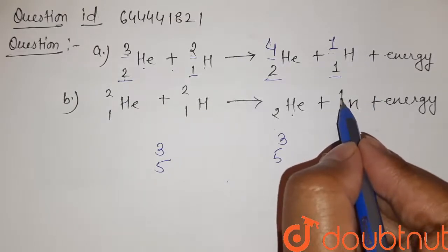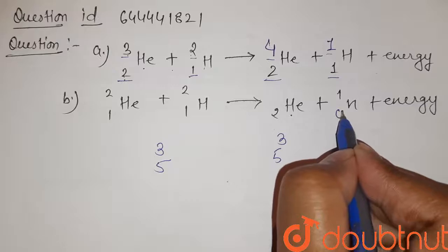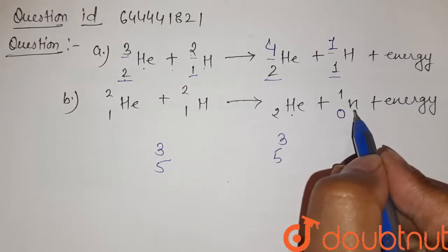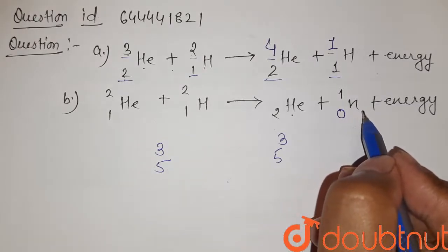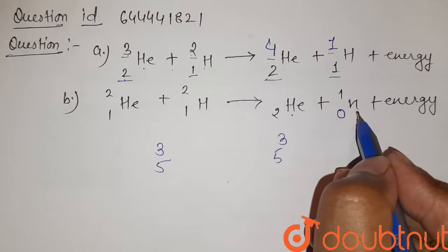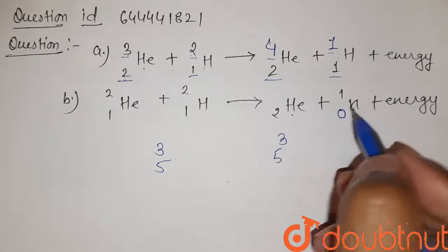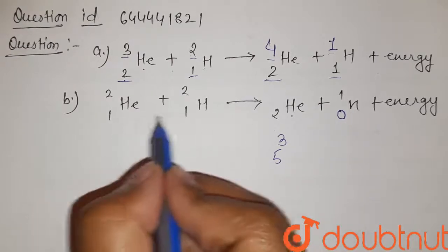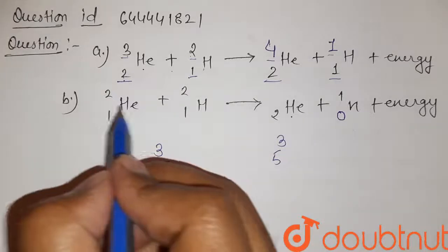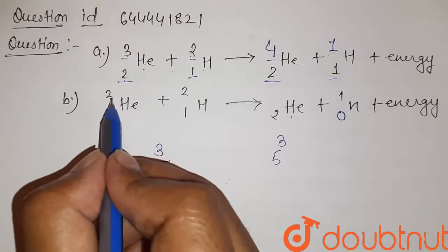So the neutron has mass number 1 but its atomic number is 0 because neutron is single specie, it doesn't have any proton. So its atomic number is 0. Now the atomic number is balanced. Now we have to only check the mass number.